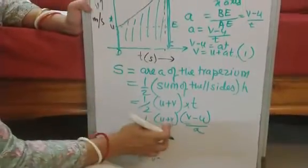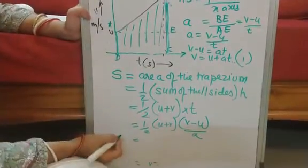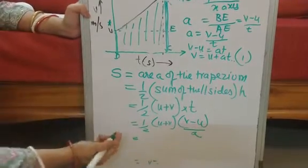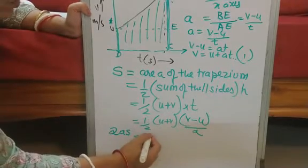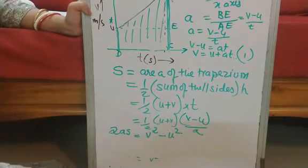Now, if you look at this, this is v plus u, v minus u. So can I write like this? These two denominators, I have taken it on the other side. So now it becomes 2AS is equal to v square minus u square.